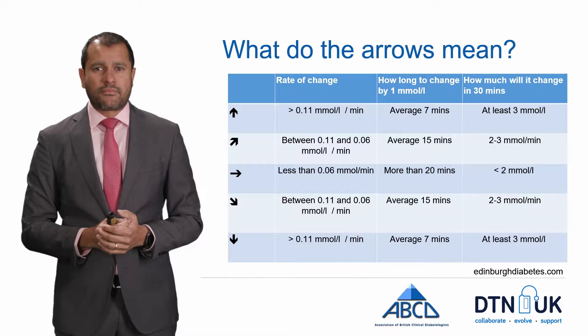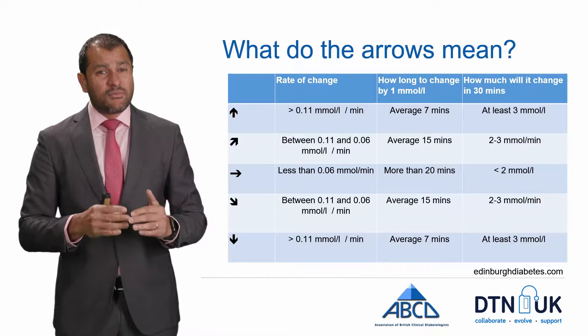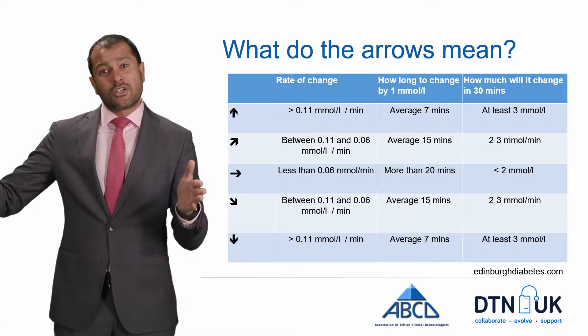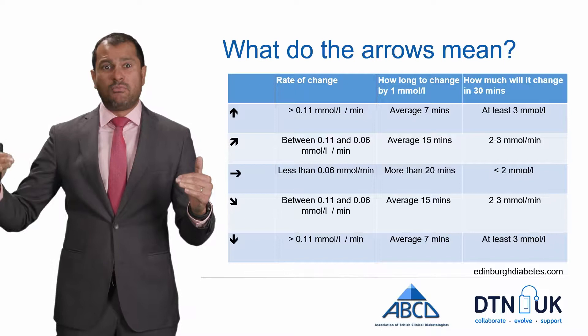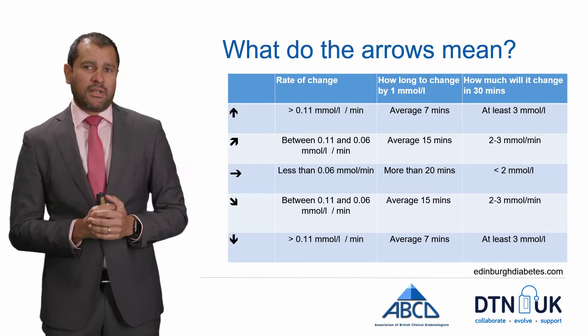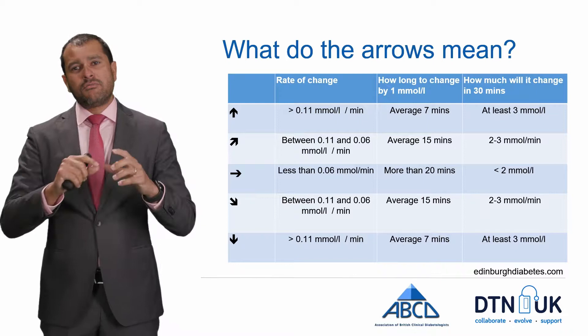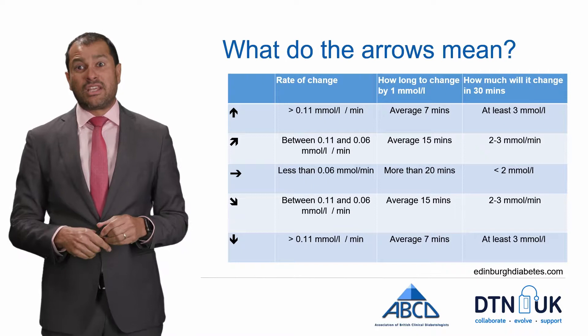If the arrow is flat, the rate of change is less than 0.06 mmol per litre per minute. It doesn't mean you're not changing — you may change by one mmol over about 20 minutes — but in the next half hour you're unlikely to be more than two mmol away from where you are. So it's going to be relatively stable over the next half hour.